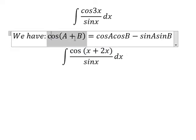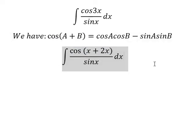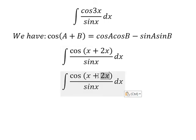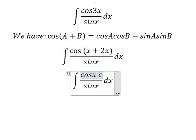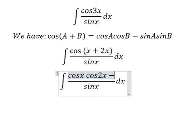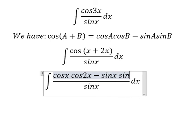And now we need to transform this one into this one. So this one we have cosine x cosine 2x minus sine x sine 2x.